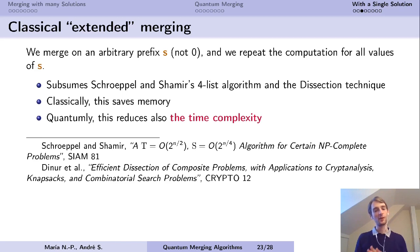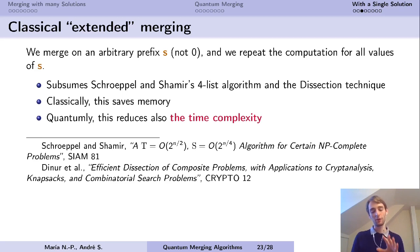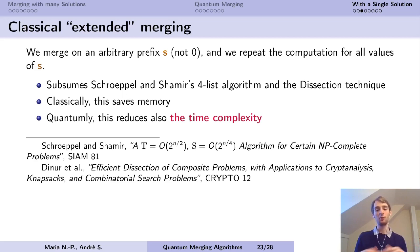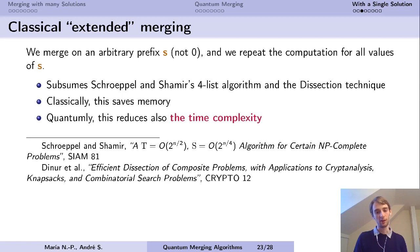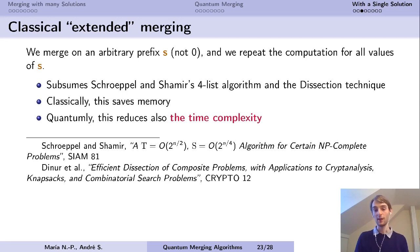However, we still want to merge because merging is a very efficient operation. We still want to merge using a non-empty prefix. But since we are going to miss the solution, we have to repeat the computation for all values of this prefix. This is Schroppel and Shamir's four-list algorithm, and in general this is the dissection technique of Dinur, Dunkelman, Keller and Shamir from Crypto 2012. Classically this is interesting to save memory, but we are going to see that quantumly it also reduces the time complexity.